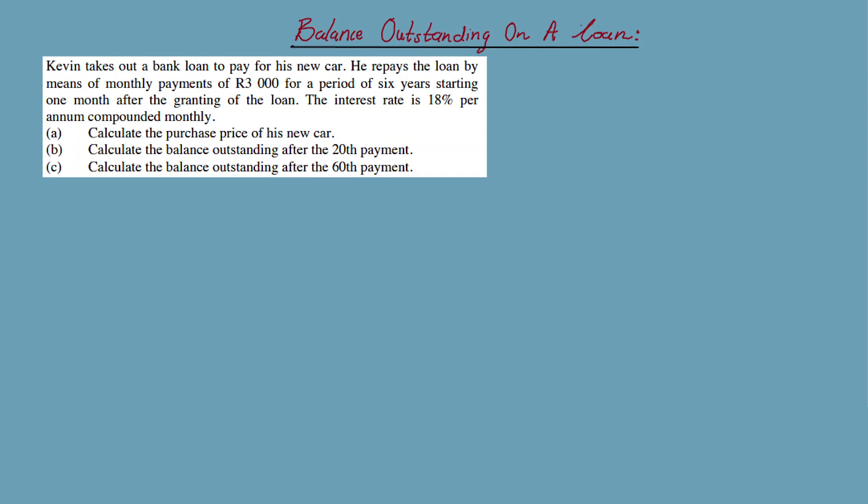This is an example to calculate the outstanding balance on a loan. Since calculations are involved, which formula? The present value annuity formula. Kevin takes out a loan to pay for his new car. He repays the loan by means of monthly payments of 3,000 rand for a period of six years, starting one month after the granting of the loan. The interest rate is 18% per annum compounded monthly. Part A: Calculate the purchase price of his new car.